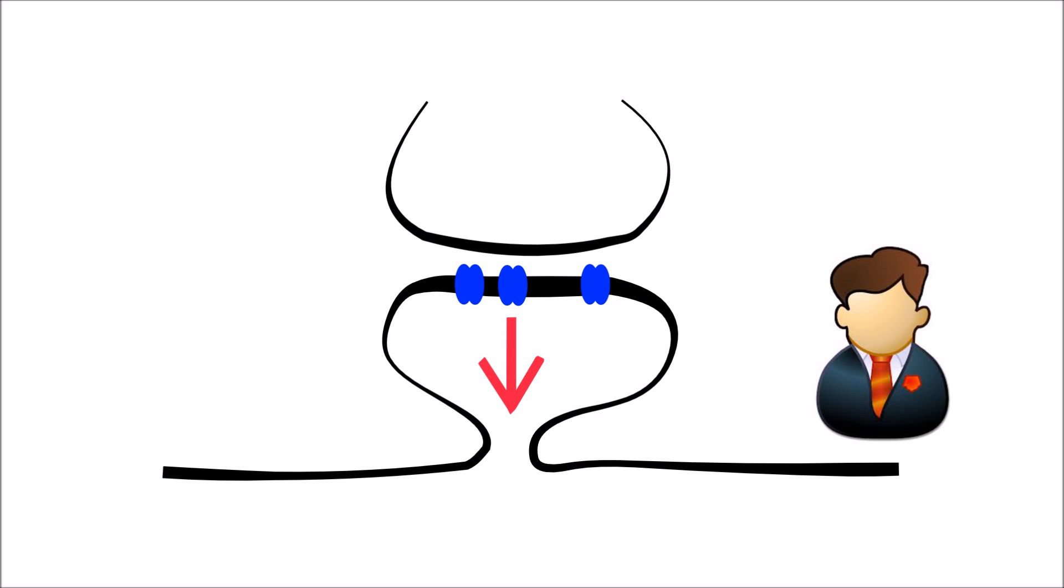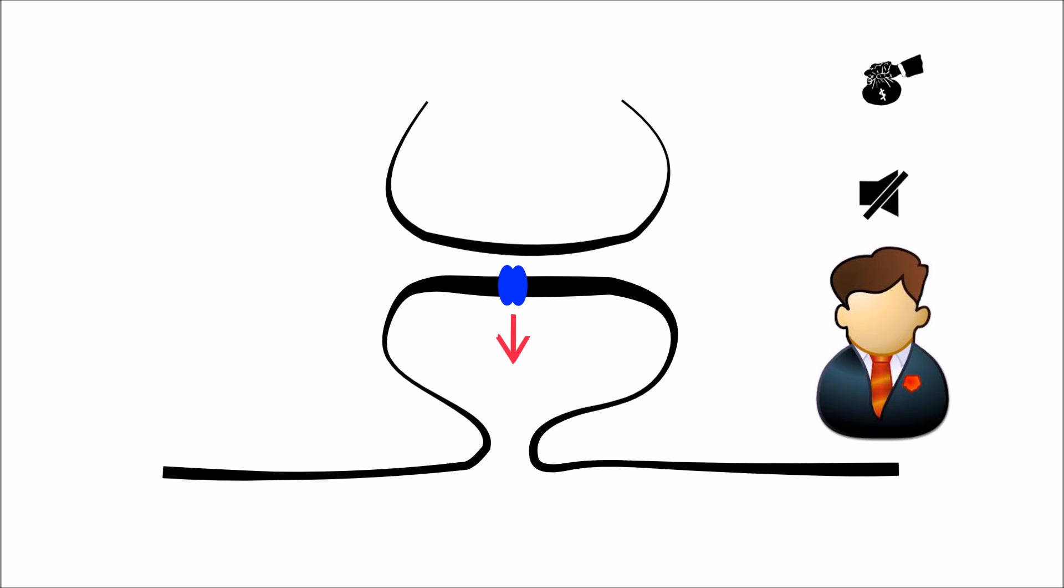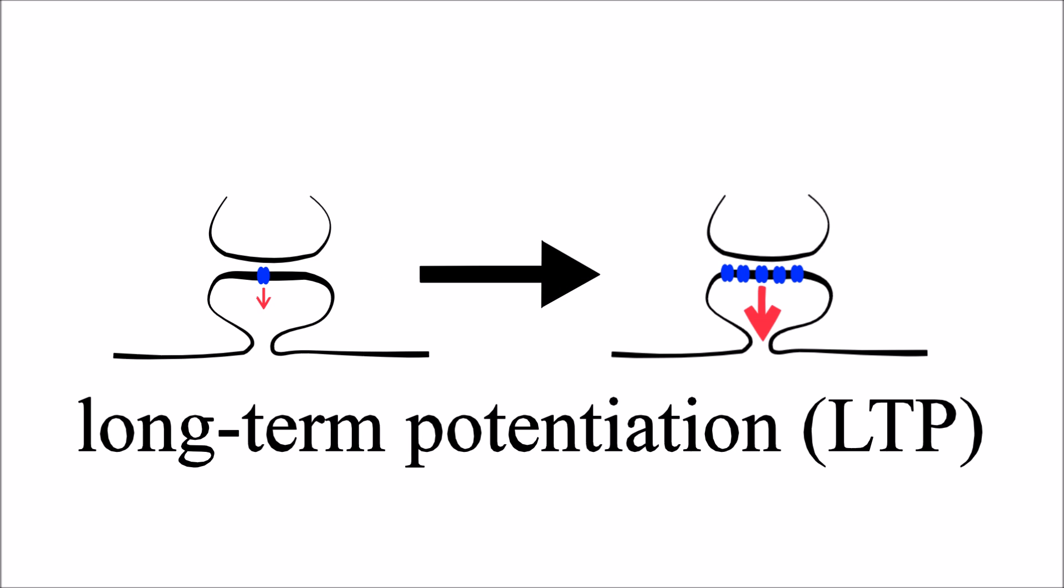Just like a politician on the phone, the neuron can adjust the volume depending on how important they think the caller is. At a synapse, this volume control can be accomplished by altering the number of AMPA receptors which pick up the chemical signal. This paper is all about a mechanism used to turn that volume up, called long-term potentiation, and how it might go awry in disease.